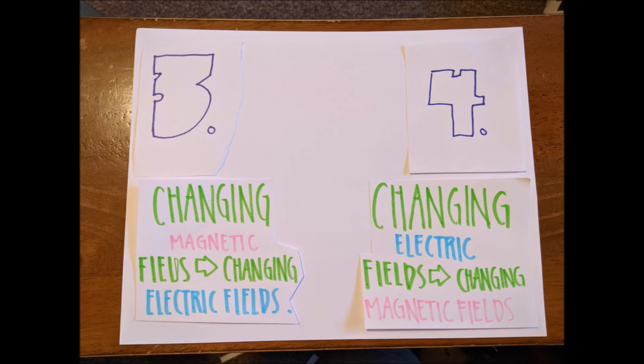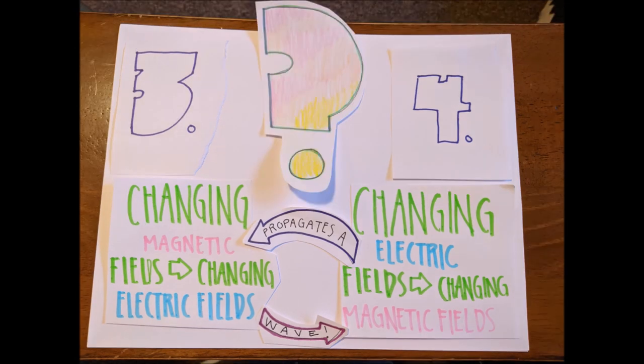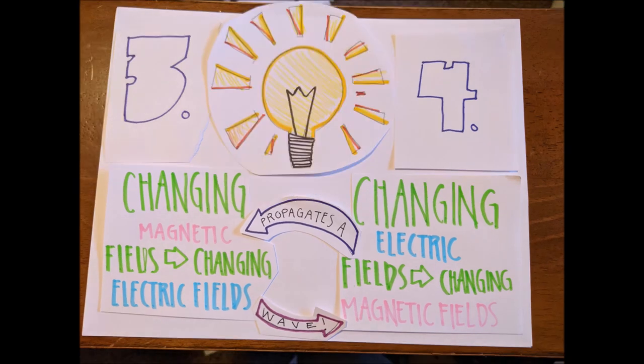As you can probably guess, this creates a cycle, and together they propagate a wave. What kind of wave you ask? I bet you could guess - an electromagnetic wave. And understanding how that happens isn't as bad as it sounds. You're actually right about to do it.